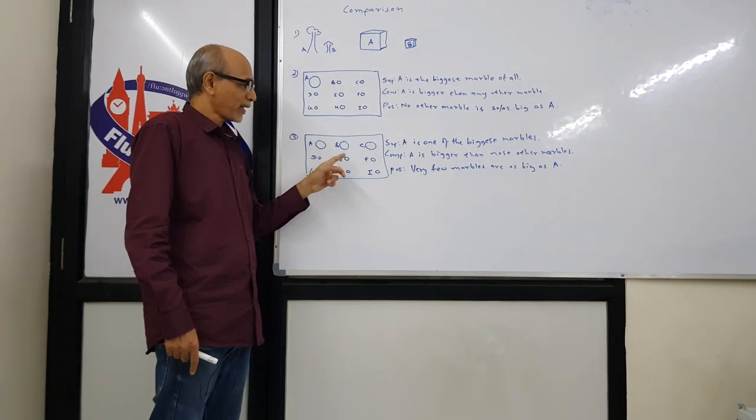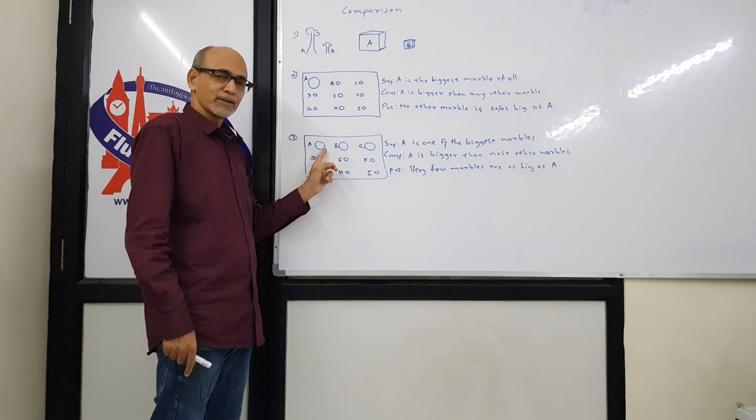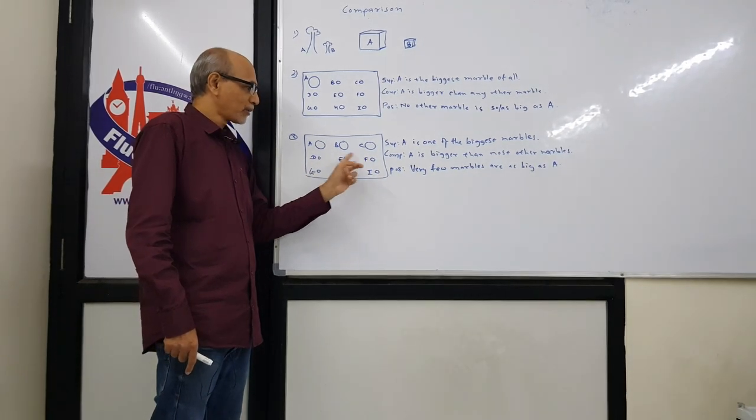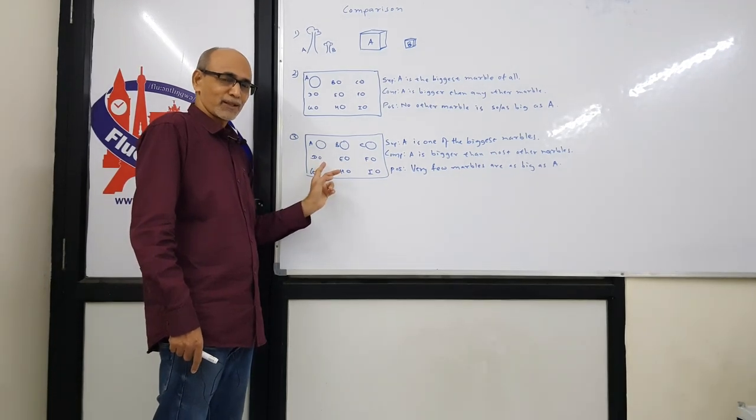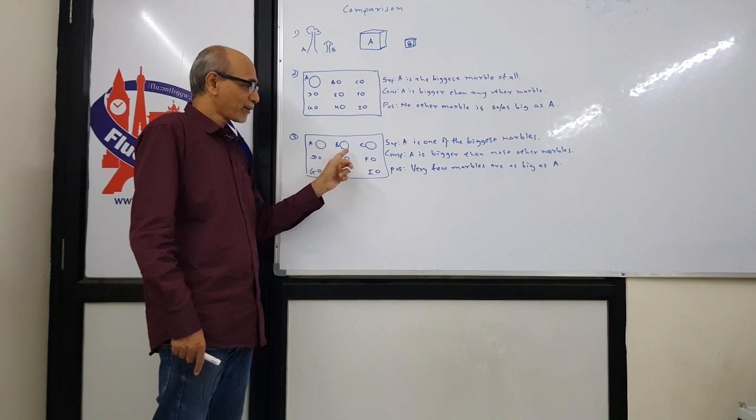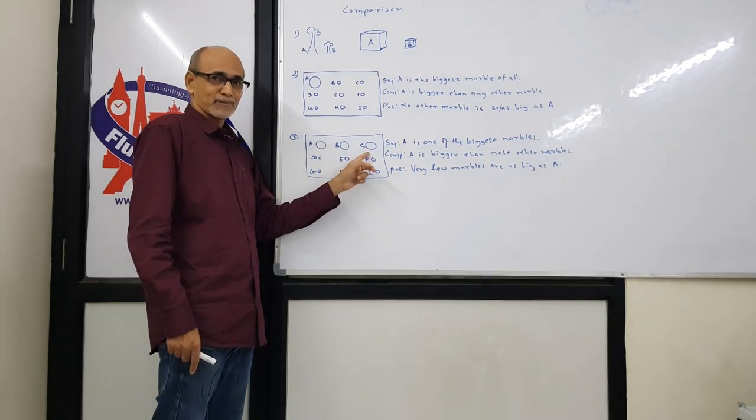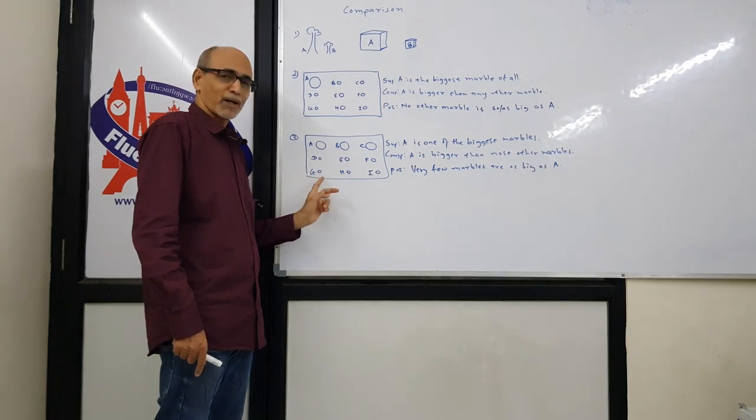For comparative, we can say A is bigger than most other marbles, not any other marble, but most other marbles. Because if we say A is bigger than any other marble, then it will be wrong for B and C.